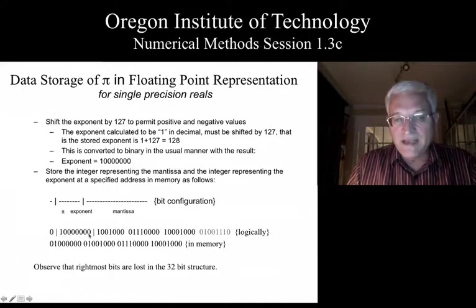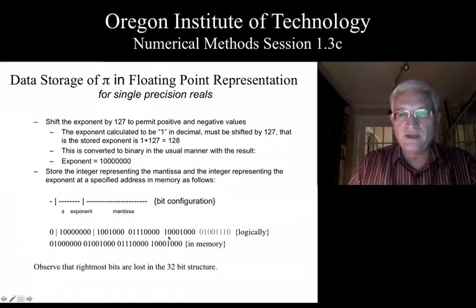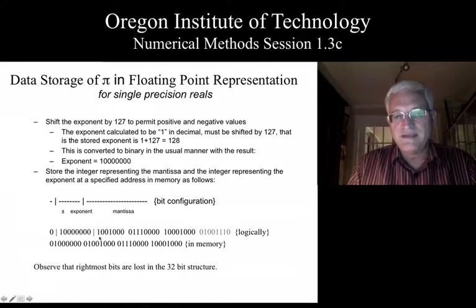If we converted 128 to binary, we would end up with 1 followed with 7 zeros. We have the number 128 being stored as the exponent, and then we have the remaining 23 that will fit into the mantissa, losing some, unfortunately, retaining 7 decimal significant digits in that number.